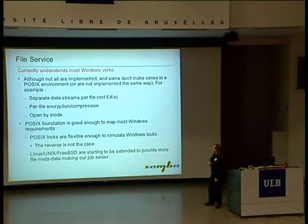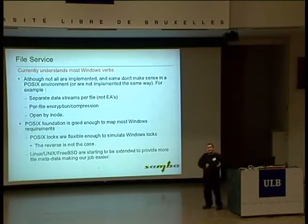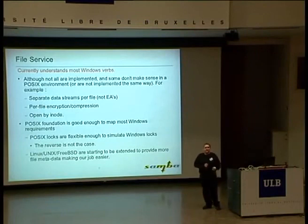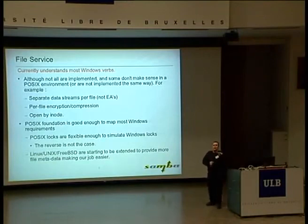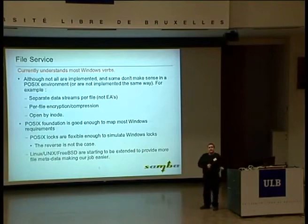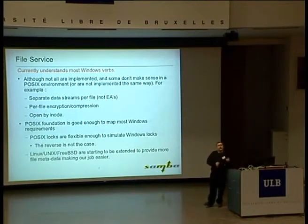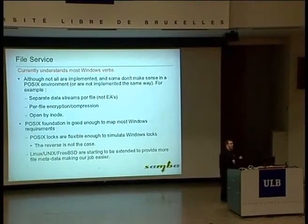I've followed Ted Ts'o's advice that having separate data streams per file is a really bad idea. The good thing is that because the internet has become so popular, and transferring files over the internet has no way of encoding separate data streams, the use of that has been curtailed. POSIX, which is what Linux mostly implements, is good enough to actually map most Windows file sharing semantics. POSIX locks, despite one horrible feature, are flexible enough to map Windows locks onto. Interestingly, you can't map POSIX locks onto Windows locks, which is why NFS clients on Windows really struggle against Windows servers.